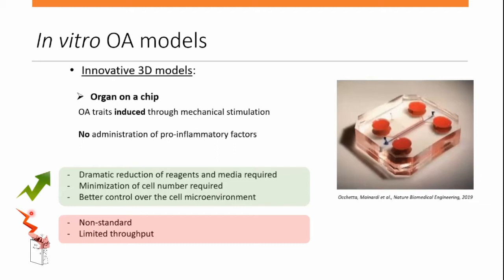Newer technologies, including organ-on-chip, belong to the category of innovative 3D models where osteoarthritis is induced through mechanical stimulation rather than pro-inflammatory factors. This leads to dramatic reduction of reagents and media required, and minimization of cell numbers — particularly interesting when working with primary cells. Since it's a micro-scale model with dimensions of roughly 2cm × 2cm, you have better control over the cell microenvironment. The limitation is limited throughput, as the depicted model has just a single chamber.